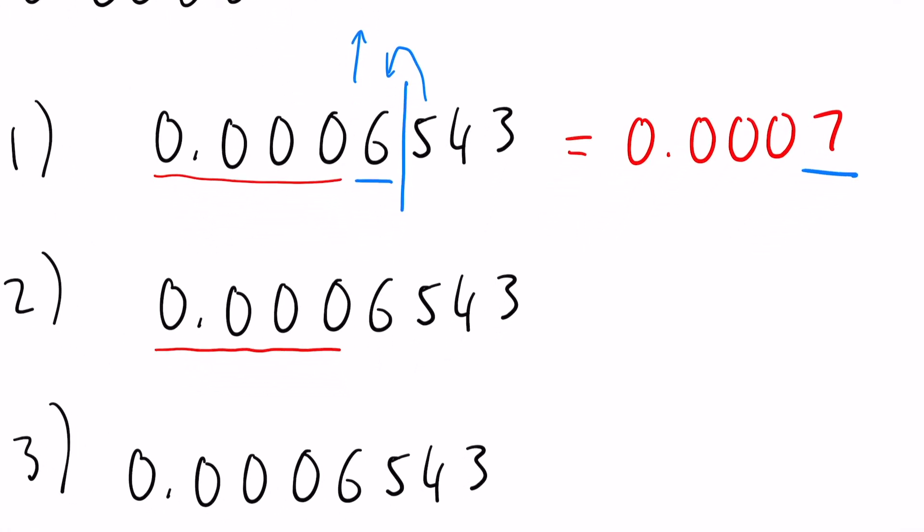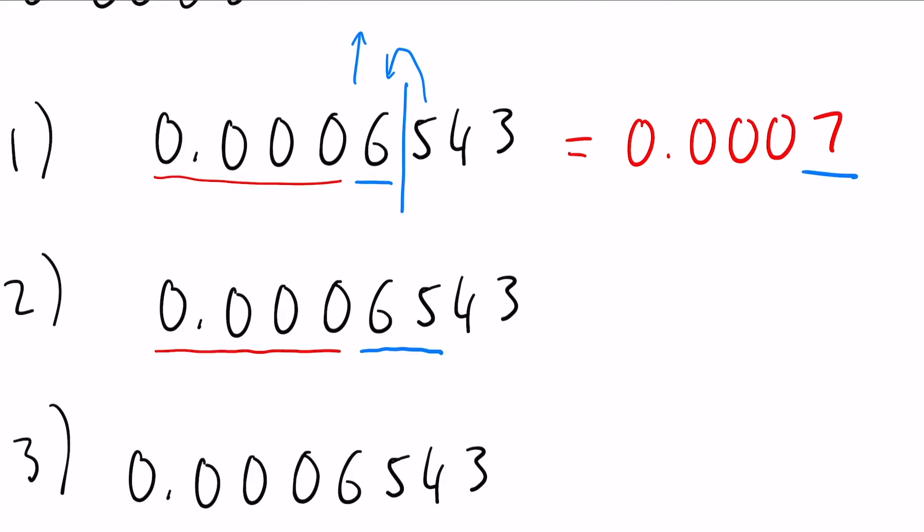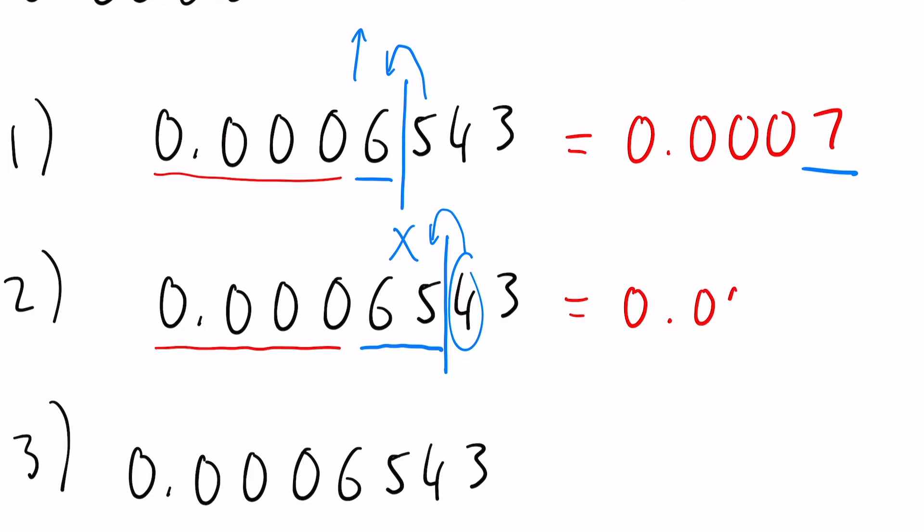And remember again, we want to cut off those zeros. This time we want to identify two significant figures, so the six and the five. We draw our line in and we see that on the other side we have that four that is less than five, so this number stays the same. And again, two significant figures this time, so 0.00065.